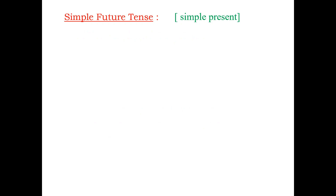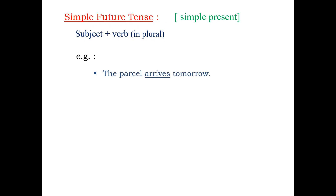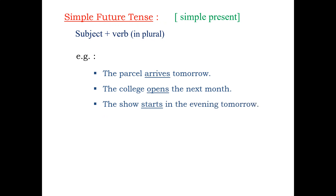Simple future tense — the usage with simple present. The sentences are formed with subject plus verb in plural. For example: The parcel arrives tomorrow. The college opens next month. The show starts in the evening tomorrow. Here, arrives is in simple present form and tomorrow indicates simple future. Opens is again in simple present form and next month is in future. Similarly, the show starts is in present form and the evening tomorrow will be in future.